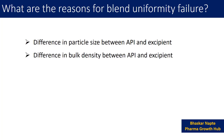The second reason for failure of blend uniformity is the difference in bulk density between the API and the excipient. If your API has a high bulk density, it is heavier compared to the excipient, and it can settle down at the bottom of the blender during the blending process, making the blend non-homogeneous. Similarly, if some excipients have high bulk density, they will also settle at the bottom of the blender and cause a non-homogeneous blend.